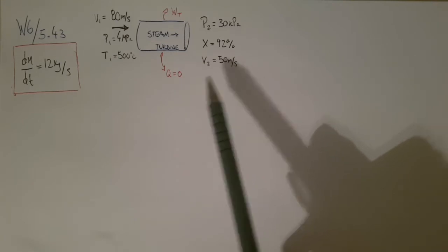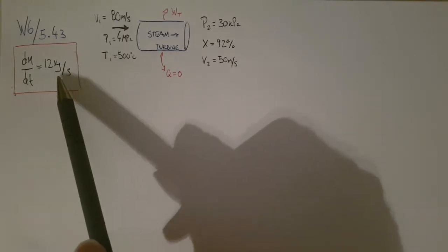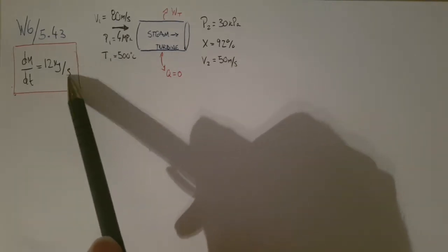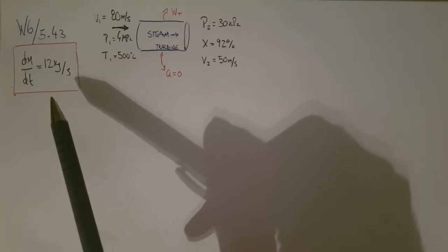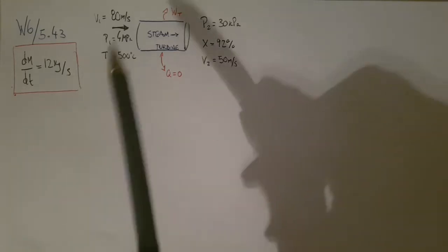The mass flow rate of the steam is 12 kilograms per second, so that's quite a lot of steam. Determine A, the change in kinetic energy, B, the power output, and C, the turbine inlet area.